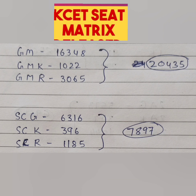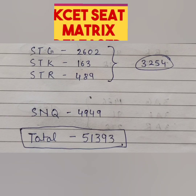Similarly there are SC categories. Within SC there are also 3 sub-categories: SC general, SC Kannada, and SC rural. Total seats for SC category is just under 8000, specifically 7897. Next is the ST category — again with all 3 sub-categories G, K, and R. The total seats for ST category is 3254.